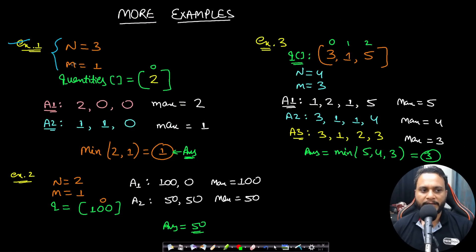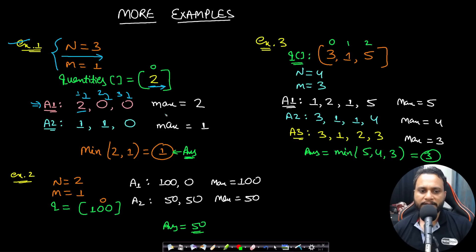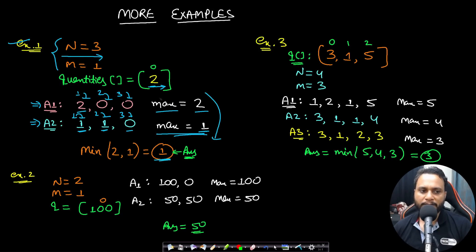In example 1, n equals 3 and m equals 1, so quantities has a single element with value 2. One assignment gives both units to store 1 and zero to stores 2 and 3, giving max value 2. Another gives 1 unit to store 1 and 1 unit to store 2, with store 3 getting nothing — max value 1. The minimum over all assignments is 1, which is the answer. Note that assigning zero to all stores is invalid because all quantities must be distributed.